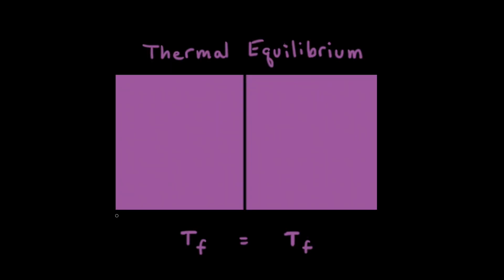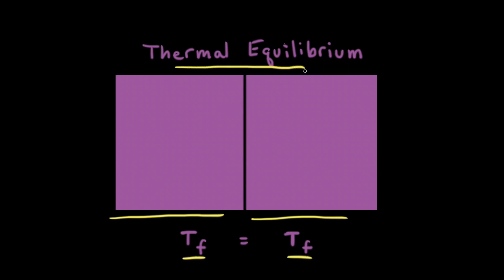Our two objects are now at the same final temperature, which means we have reached thermal equilibrium. Since thermal equilibrium has been reached, there is no more flow of heat between the two objects. And since both objects are at the same final temperature, the average kinetic energy of the particles in both objects is now the same.